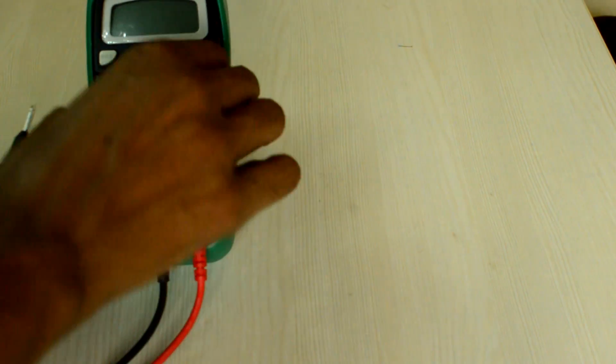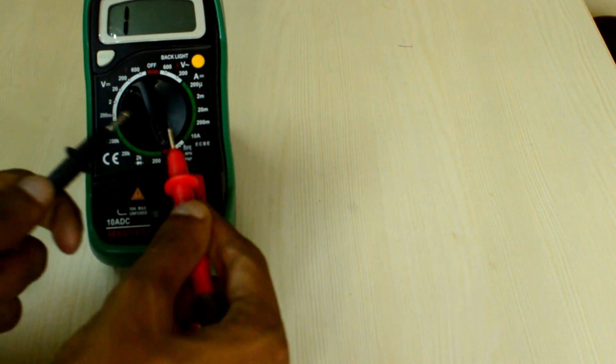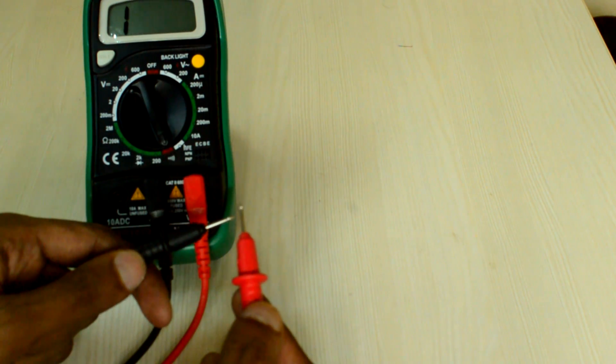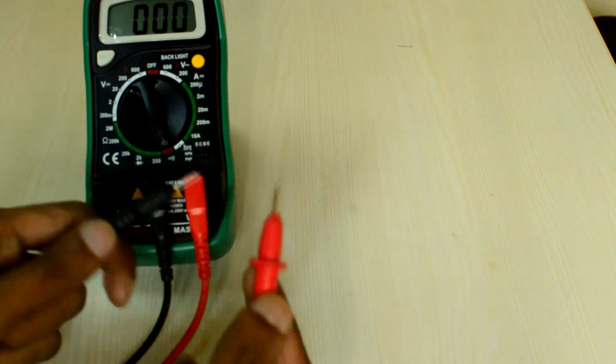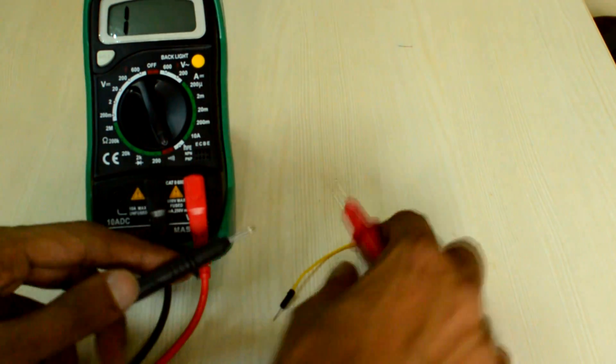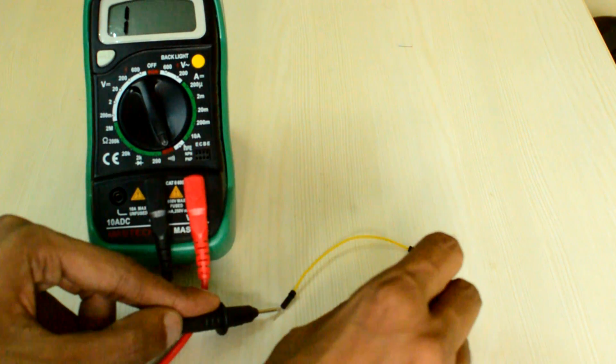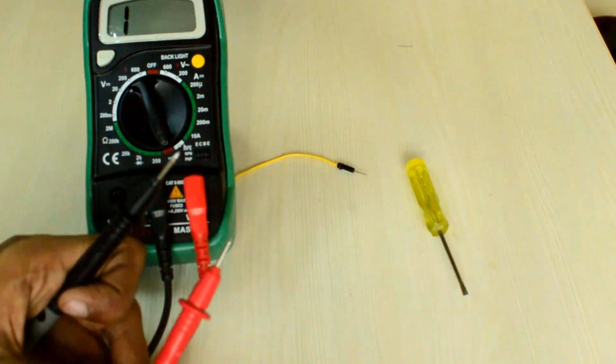Now let's learn about the continuity mode of the DMM. Switch the dial to continuity mode. Make sure that when both the pins are in contact, the DMM should beep. The continuity mode measures almost 0 resistance. This can be used to find broken cables. Let's see if this wire is broken. The DMM beeps which means that the wire has almost 0 resistance value hence it is not broken.